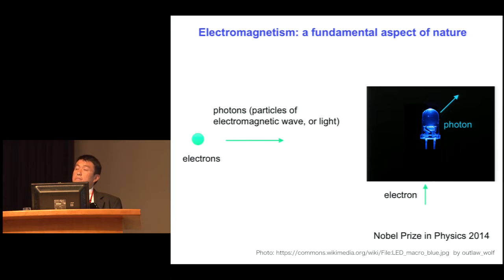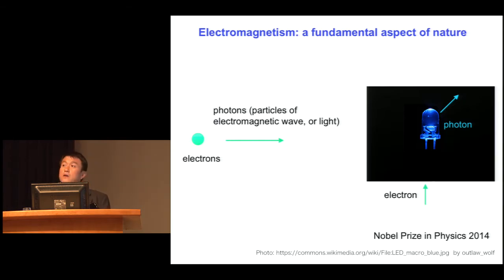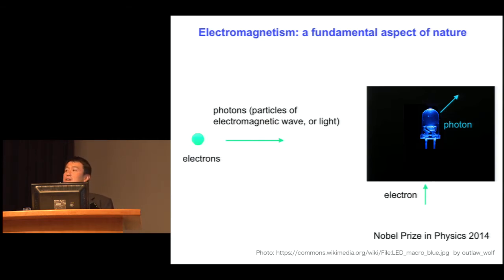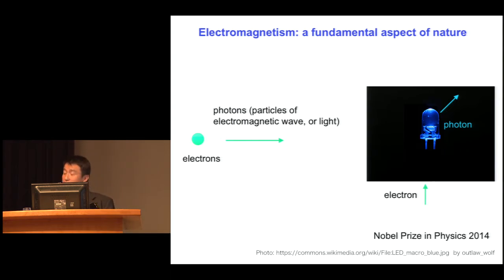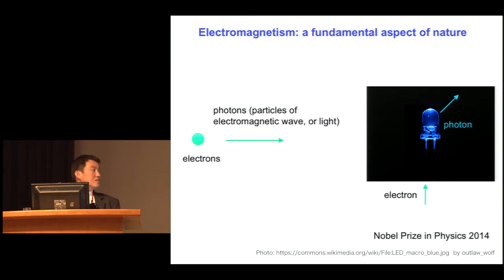The interaction between them produces wonderful physics, as well as very important technological advancement. Here is a very nice example — Professor Noda also alluded to this — of a light-emitting diode. This is a case where you send in an electron, and the light comes out. That's revolutionizing lighting right now, and it's a wonderful example of these two fundamental particles interacting together. This has been recognized by a Nobel Prize in physics to three Japanese scientists in 2014.